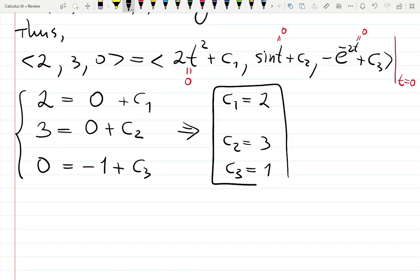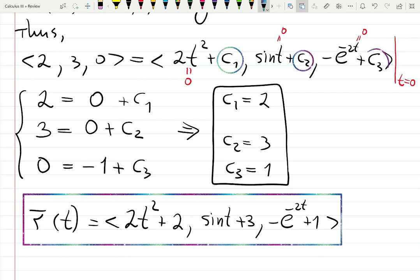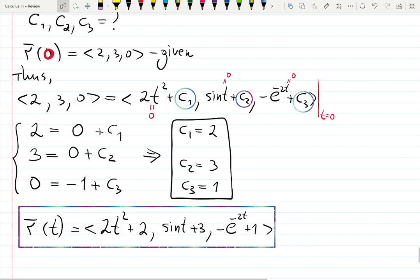Solving this system of three equations with three unknowns, I get that C₁ is 2, C₂ is 3, and C₃ is 1. Thus, the answer for question A, what is our position vector, is going to be <2t² + 2, sin t + 3, -e^(-2t) + 1>. That is my C₁, C₂, and C₃. This is how we found C₁, C₂, C₃. And then you repeat the whole process if we are asked to do more integration. So we finished part A.